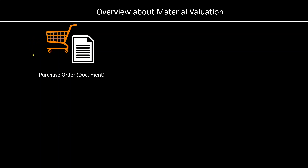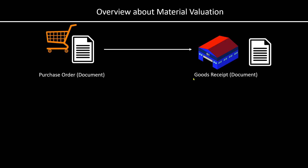When we create a purchase order, a purchase order document is also created in the background. For the purchase order, once we receive the goods, we post the goods received, and also here a document will be issued by the system.